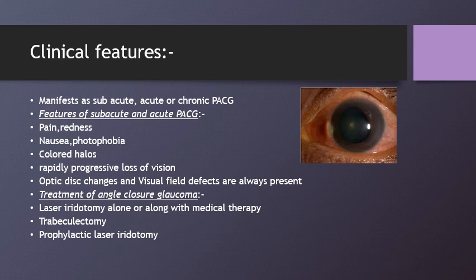Primary angle closure glaucoma manifests as subacute, acute, or chronic forms. The subacute form is characterized by an attack of transient rise in IOP lasting a few minutes to 1–2 hours. Precipitating factors include physiological mydriasis, shallowing of the anterior chamber after lying prone, or pharmacological mydriasis from pupil dilating drugs. Symptoms include episodic unilateral transient blurring of vision and colored halos, with self-termination of the attack. The eye is usually white and not congested.